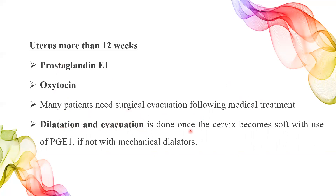Dilatation and evacuation is done once the cervix becomes soft with prostaglandin E1 or with a mechanical dilator. So that is about missed miscarriage. We have covered threatened abortion, inevitable abortion, complete abortion, incomplete abortion, and missed miscarriage. Next class we will see septic abortion and recurrent abortions. That's all for today — if any doubts, do ask me personally and I'll revert back to you. Thank you.